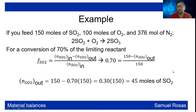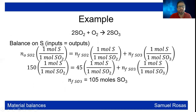This was already shown in the previous video. Using a sulfur balance — inputs equal outputs — 1 mole of S per mole of SO2 entering (150 moles) must equal the S leaving in SO2 (45 moles, with ratio 1:1) plus the S leaving in SO3 (ratio 1 mole S per mole SO3). So 150 = 45 + n_SO3, yielding 105 moles of SO3.